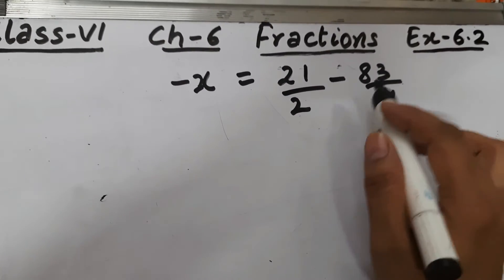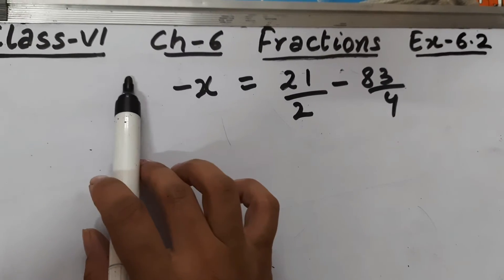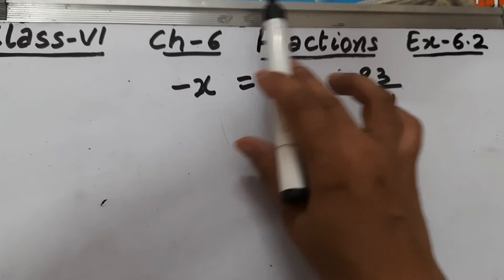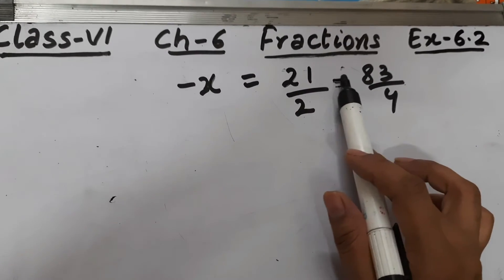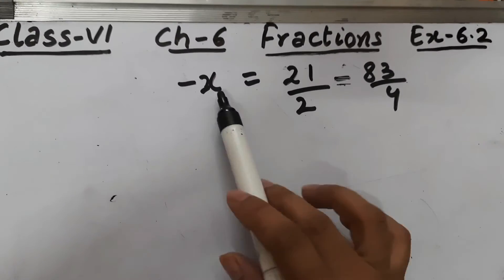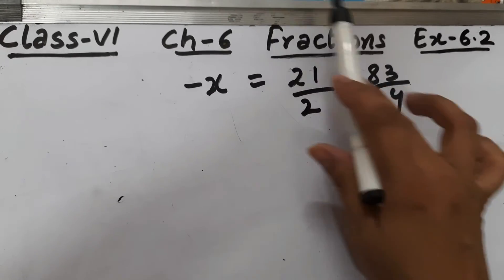We have shifted 83/4 to the right side of equal to. 83/4 was in the left hand side, and when it shifted to the right hand side the sign became negative. Jab ye 83/4 left hand side se right hand side aaya to uska sign kya ban gaya, minus ka ban gaya.